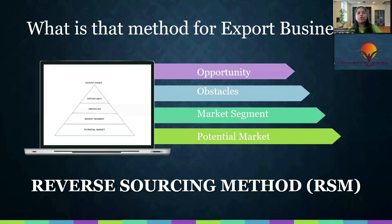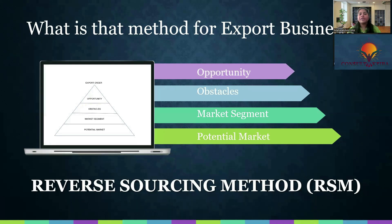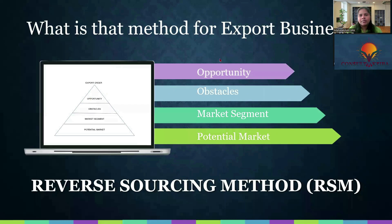As I told you in the conventional method, exporters look for markets which are importing these products. What you would have done before this is a Google research or some research, and saw that there are top 10 countries which have the potential for your product. But in the market, there are four levels of markets called tapped, untapped, saturated, and unsaturated markets.